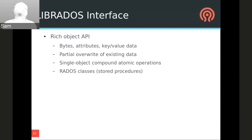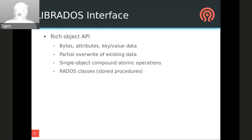This key-value mapping is useful, for example, for representing a RadosGW S3 bucket index, which we need to be able to efficiently insert and remove entries from, and also list in order. We also support atomic read and write transactions on a single object. You can also load a RADOS object class into the OSD to add additional RADOS operations. One example we already have is an advisory locking class.